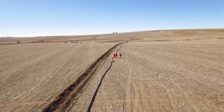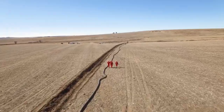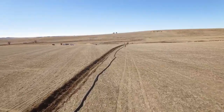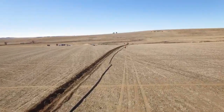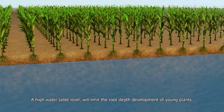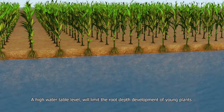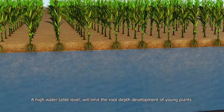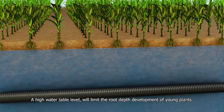It should be determined if the site is suitable for a water management or sub-irrigation system. Water table management is viable in soils that have a natural water table.